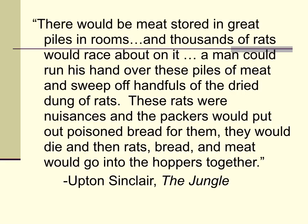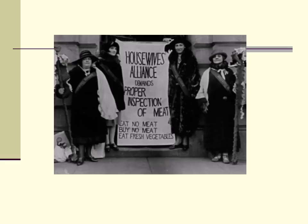It's a difficult book, but if you ever want to read about how awful the working conditions were, I highly suggest Upton Sinclair's The Jungle. You also have alliances and unions that started up during this time period. This is an image of the Housewives Alliance — they demanded proper inspection of meat: eat no meat, buy no meat, eat fresh vegetables.